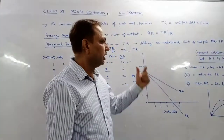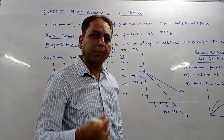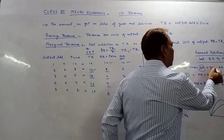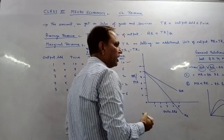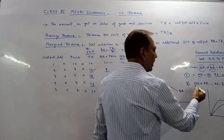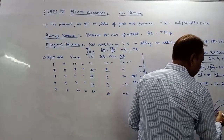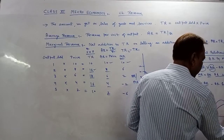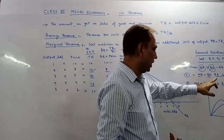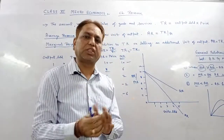Let us talk about the general relationship between AR and MR. There are three situations. First: when MR is greater than AR — AR will rise. Second: when MR is equal to AR — AR will be maximum and constant. Third: when AR is greater than MR — AR will fall, as it is currently falling. So the relationship depends on AR: when MR is smaller, AR rises; when MR comes up and increases, AR falls; when they are equal, AR becomes maximum and constant. More relationship points will come when we study different situations.